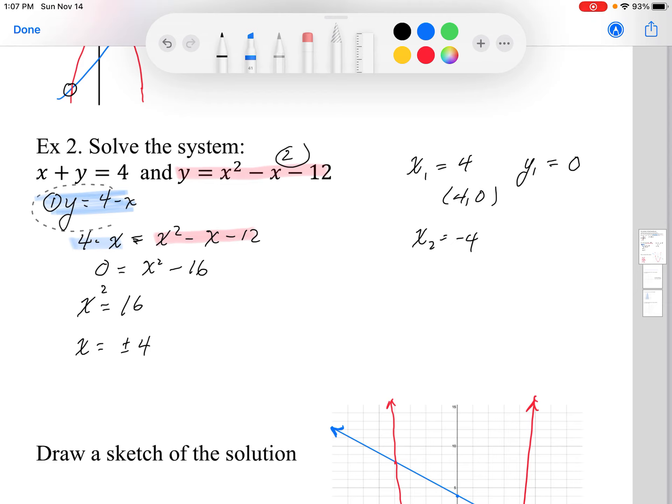The other solution is going to happen when x equals negative 4. Again I'm going to plug it back into the easier of the two solutions. When I solve for y, I get y equals 4 minus negative 4 which is positive 8. So my other solution is at negative 4, positive 8. So there is the solution to my system of equations.